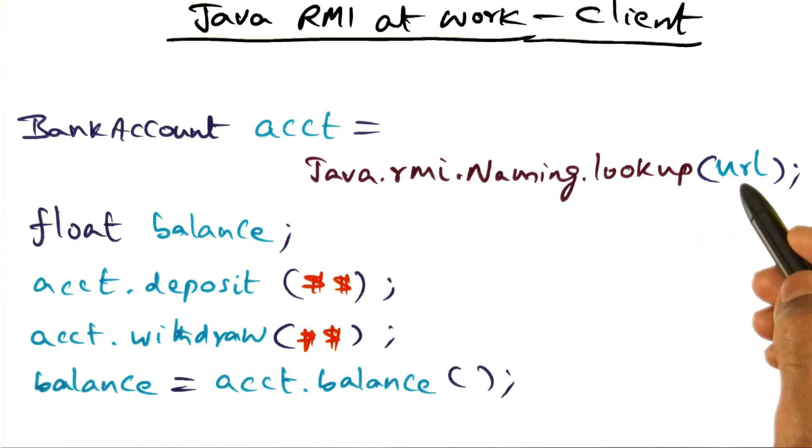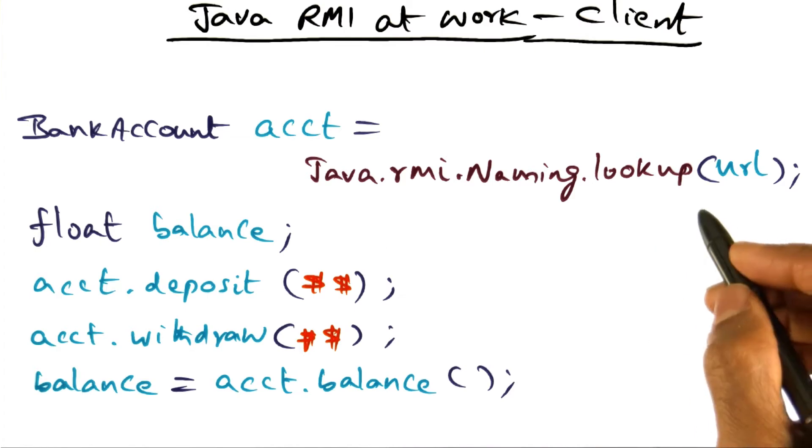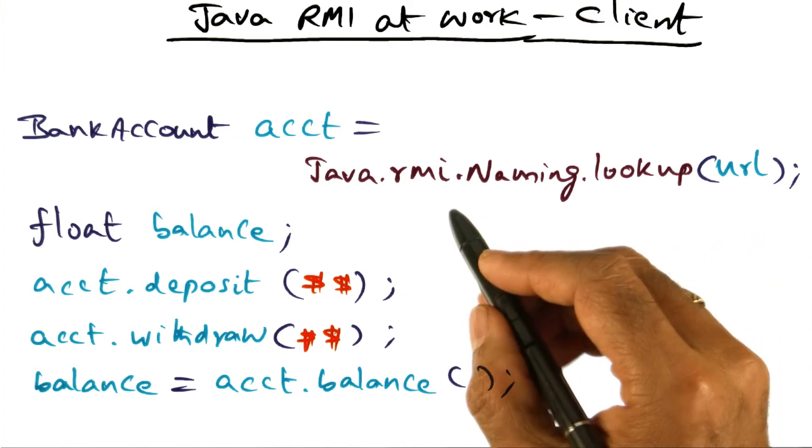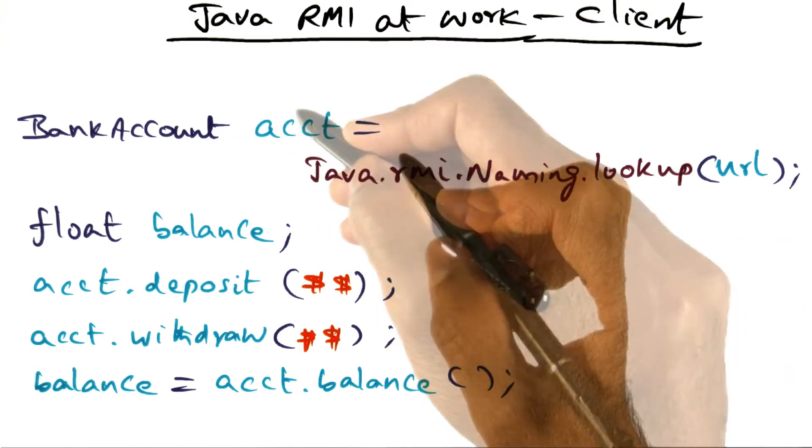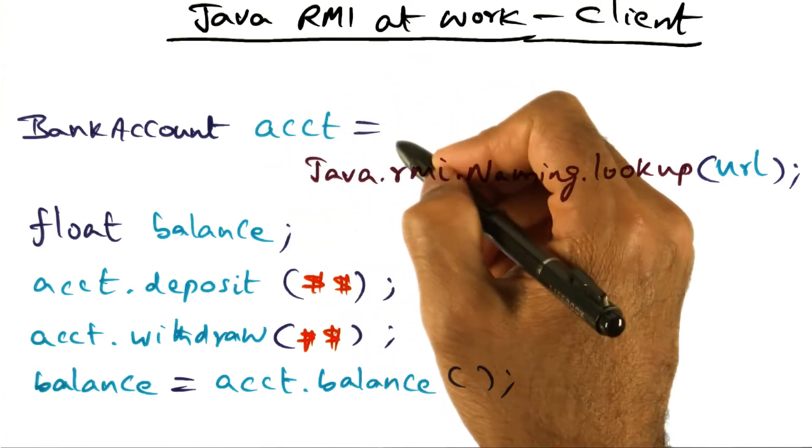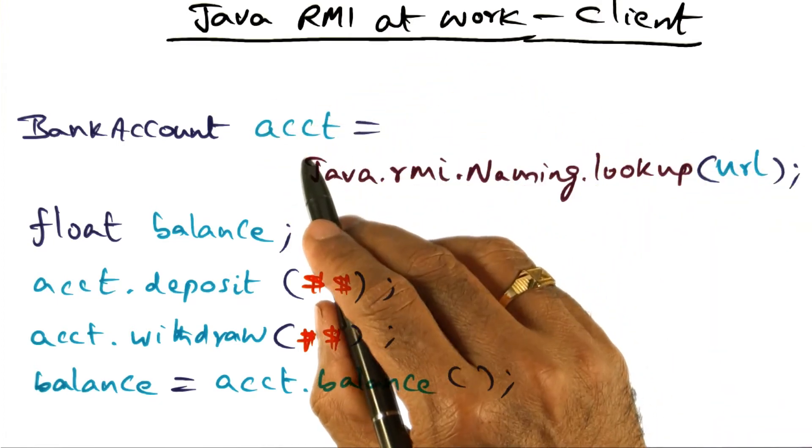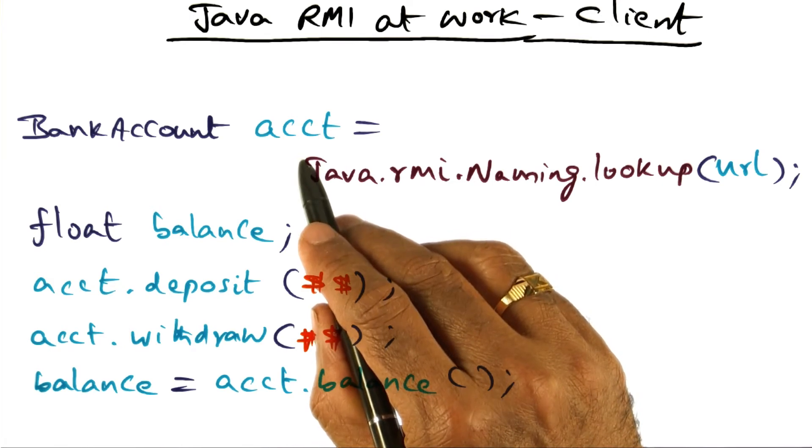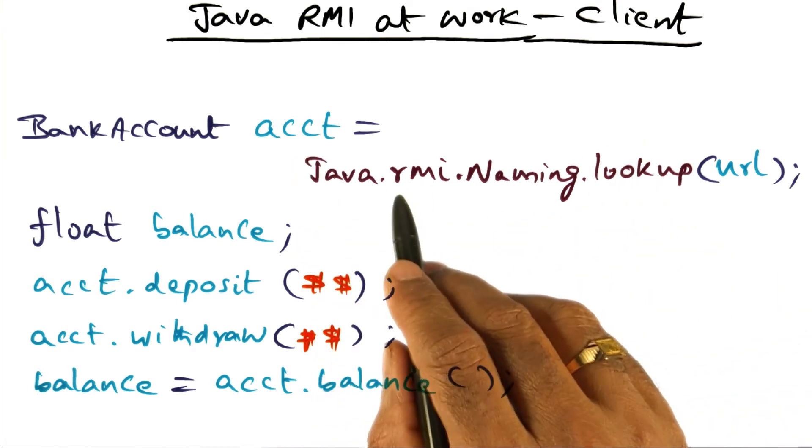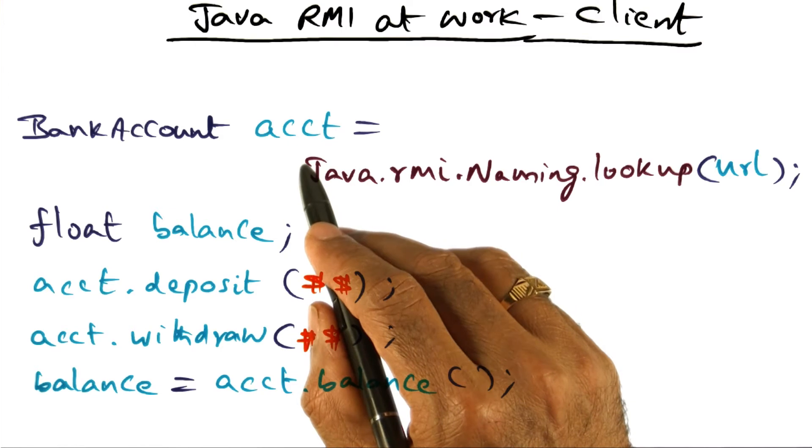When it does this lookup of the URL using the facility available in the Java RMI system, a local access point for that object is created on the client side. Now we've got access to the object at the server through this local name account.